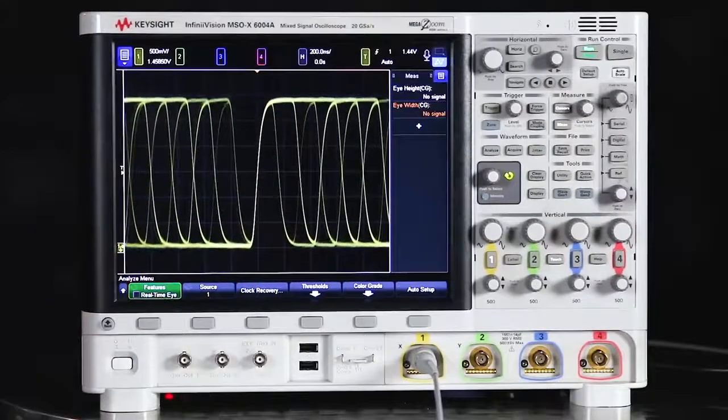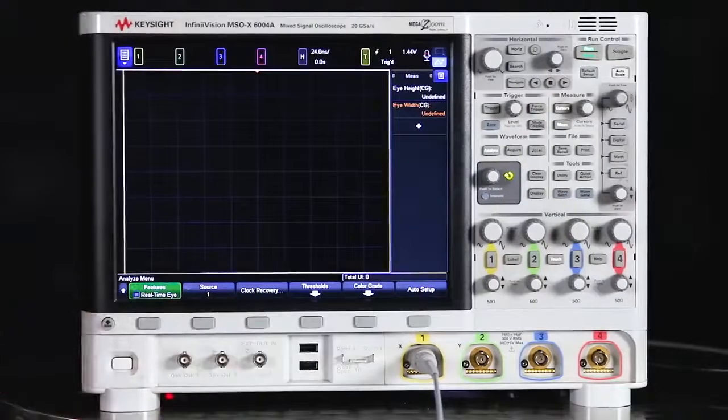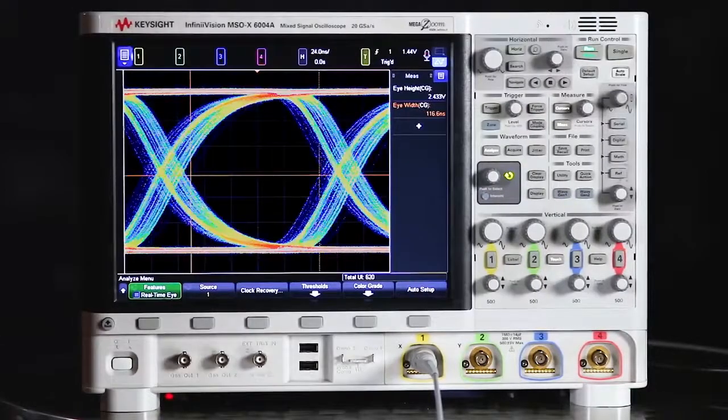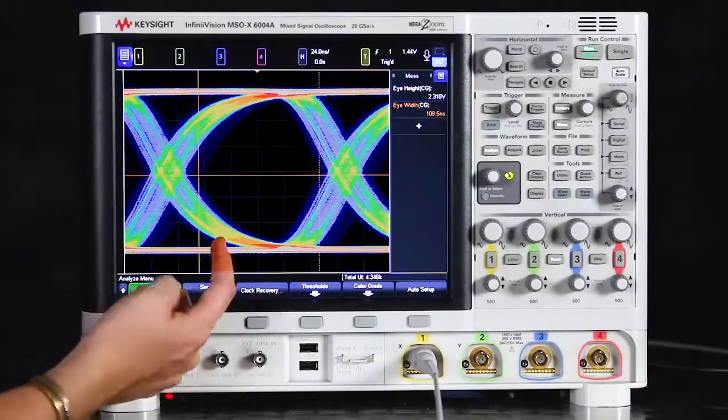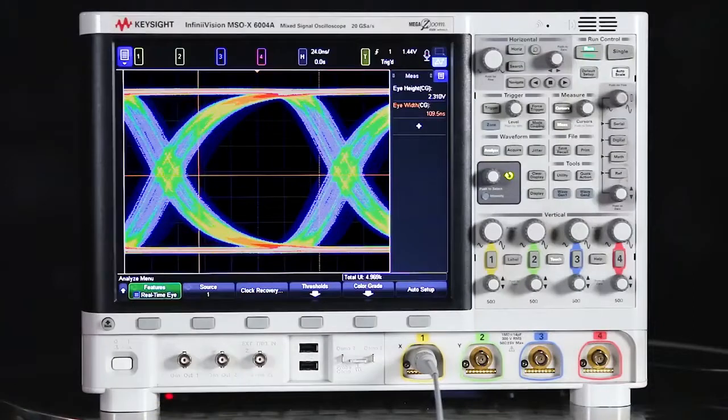And now all we have to do to set up the eye diagram is select Auto Setup. And that's going to automatically set up the eye diagram in the center of the screen. So the scope will set up that eye diagram centered around that ideal bitrate that it calculated.